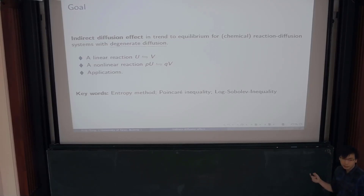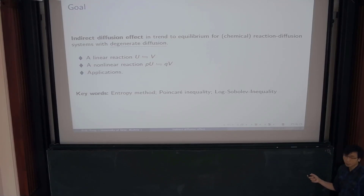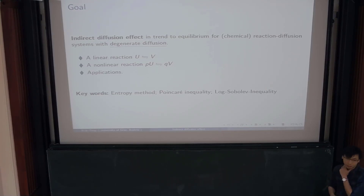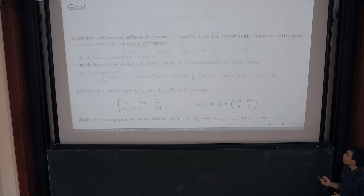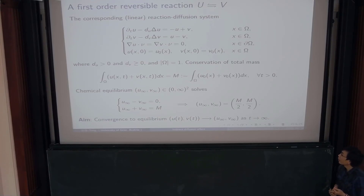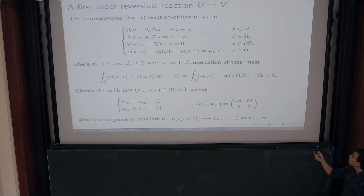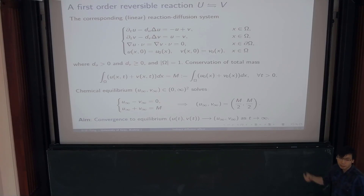I put here some words to try to attract your attention: entropy method, log-Sobolev inequality, log-Sobolev inequality. Basically, it's everything that you're all familiar with. So let's start already with the very easy, simple first-order reactions, where you have a reversible reaction between some chemical species U and V. Basically, you have a forward reaction and a backward reaction with a linear rate.